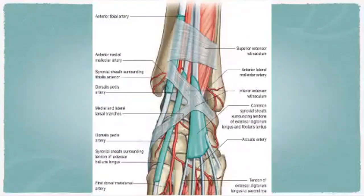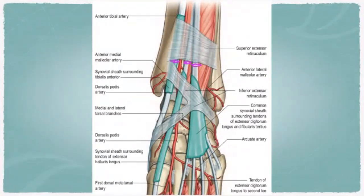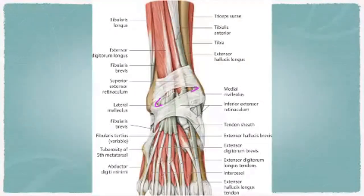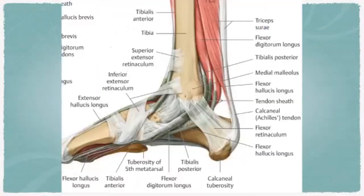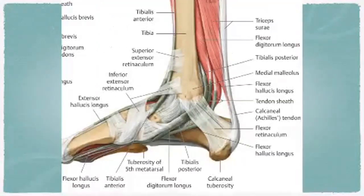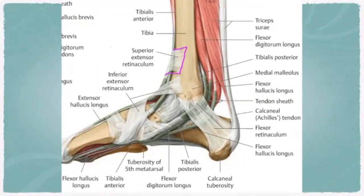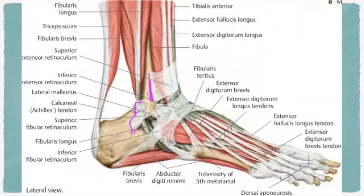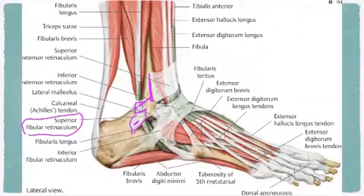Looking at the cadaver specimen, you can observe all the tendons passing beneath the superior extensor retinaculum. Below it is continuous as the inferior extensor retinaculum, and laterally it bounds with the fibular retinaculum. Most of the time it blends with the fibular retinaculum.